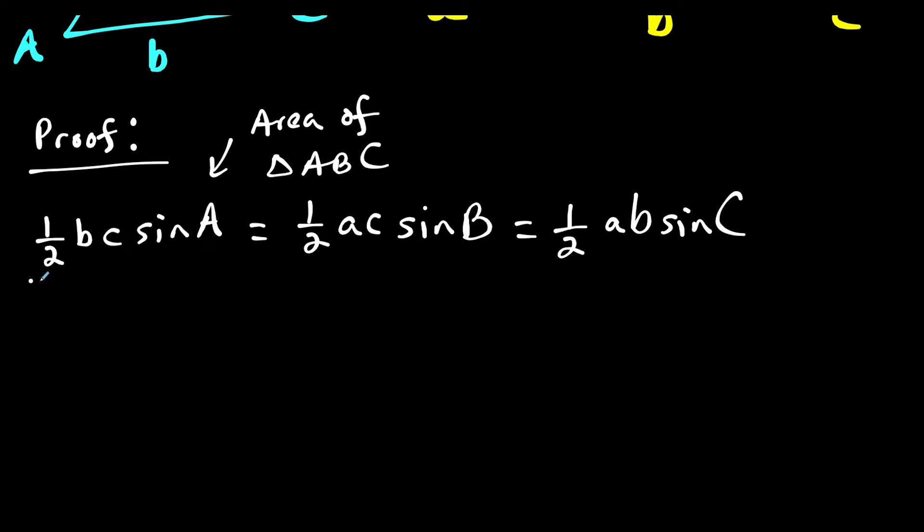So now to derive the formula, we're going to do a little bit of algebra. We're going to divide all three sides of this equation by one half ABC. So we're doing that to all three sides here. And once everything cancels out, notice we have one half over one half canceling on each part here.